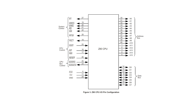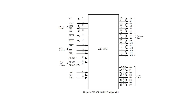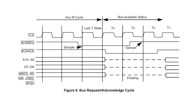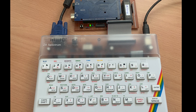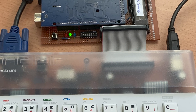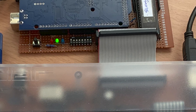To download the game, I use the bus request and bus acknowledge signals on the Z80. The Arduino asserts bus request and then waits for the bus acknowledge to arrive. Then it directly drives the Z80 address and data buses, as well as all the other signals required to download the code into the static RAM.